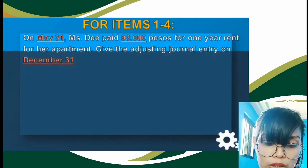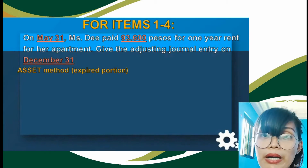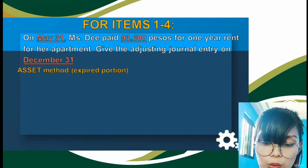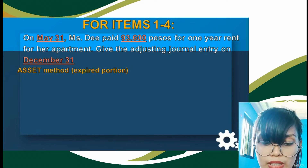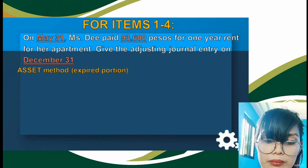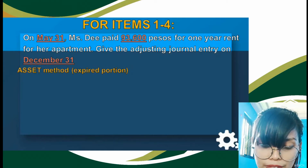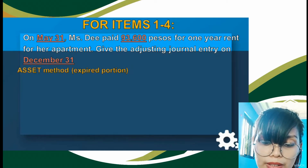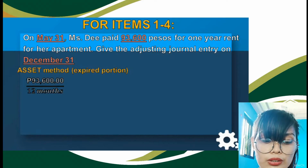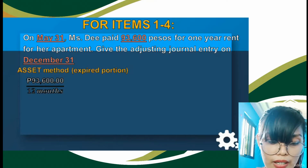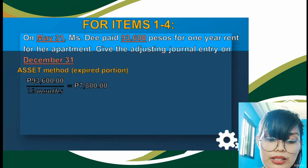For the asset method, we will get the expired portion of the payment. To know the expired portion, we have to compute how much Ms. T pays for her apartment rent monthly. We divide the total payment of P93,600 by 12 months since the payment is valid for one year, and we get P7,800.